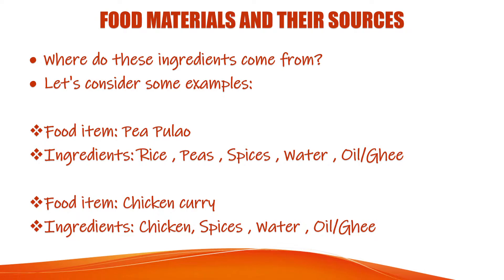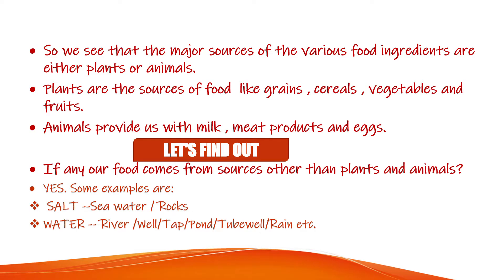Now the question arises: where do these ingredients come from? Let's consider some examples. Pea pulao has ingredients like rice, peas, spices, water, and oil or ghee. Chicken curry has ingredients like chicken, spices, water, and oil or ghee. So we see that the major sources of various food ingredients are either plants or animals.